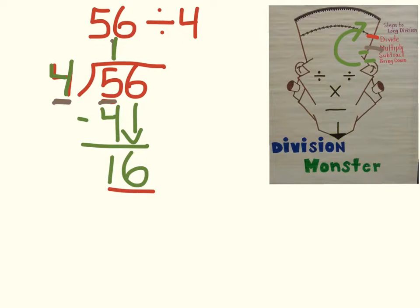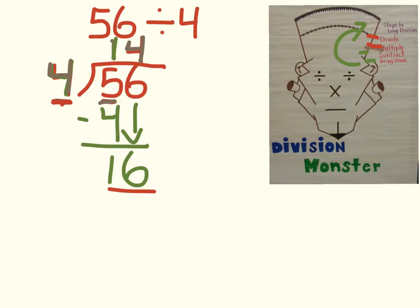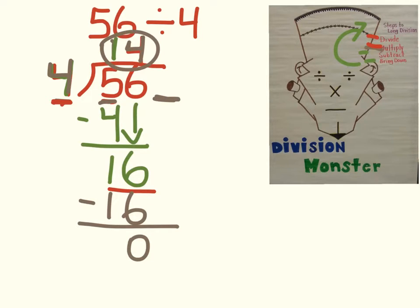Now I'm working with the number 16. So let's divide: 16 divided by 4. How many times does 4 go into 16? From my multiplication table, 4 times 4 is 16, so 16 divided by 4 is 4. I put a 4 above the 6. Then multiply: 4 times 4 is 16. Then subtract that. Finally I bring down, but there are no more numbers to bring down, so I'm done. 56 divided by 4 equals 14.